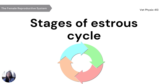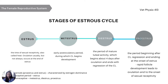The estrous cycle can be divided into four stages. First is estrus — the time of sexual receptivity, also called heat. Ovulation usually, but not always, occurs at the end of estrus. Next is metestrus — the early post-ovulatory period during which the corpus luteum begins development. Third is diestrus — the period of mature luteal activity — which begins about four days after ovulation and ends with the regression of the corpus luteum. Lastly is proestrus — the period beginning after corpus luteum regression and ending at the onset of estrus. A rapid follicle development leads to ovulation and to the onset of sexual receptivity.